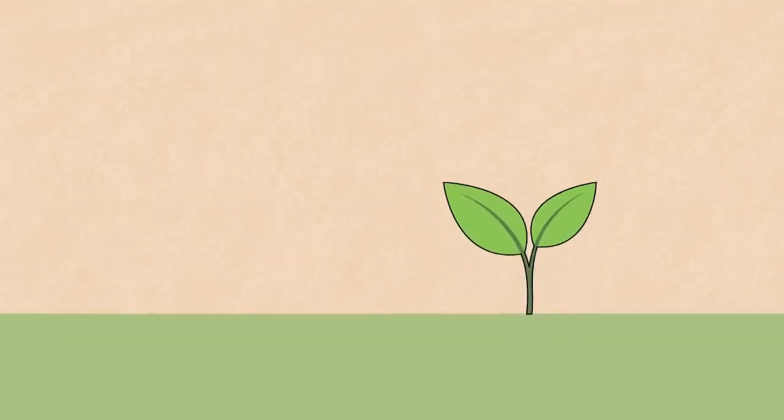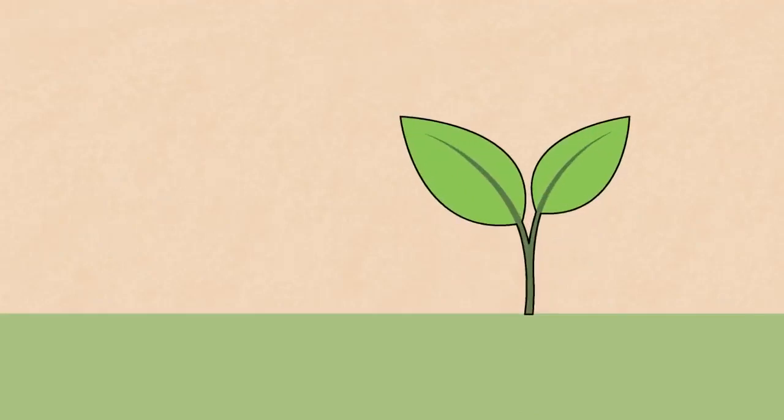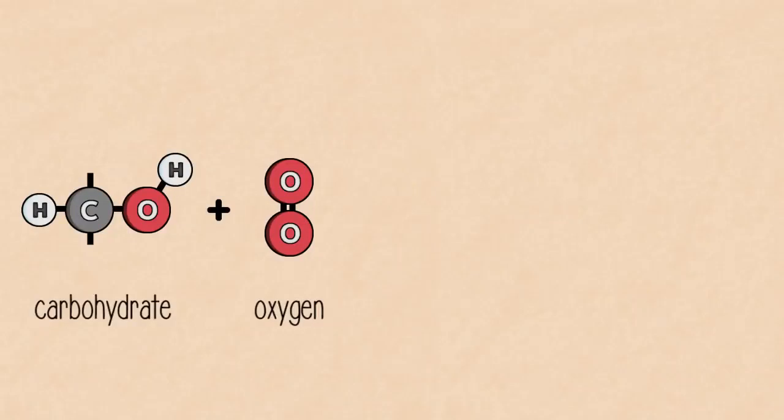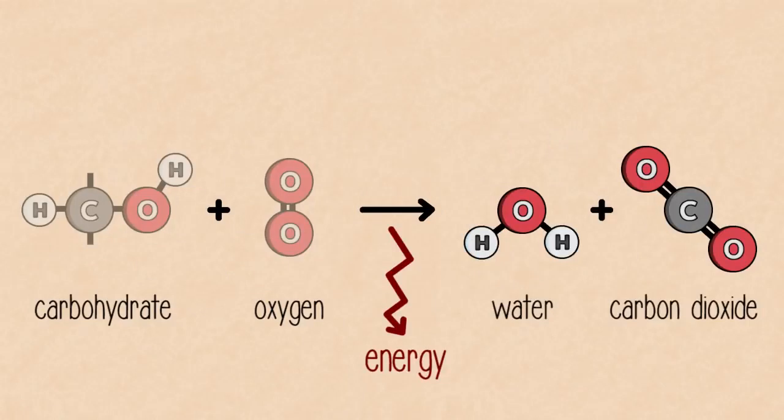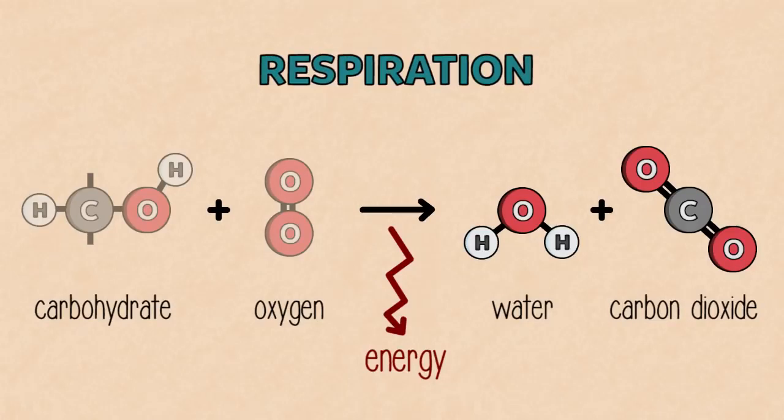Energy is now stored, and living things can use the carbohydrates to build their bodies and structures. To obtain energy, they simply reverse this reaction, letting the oxygen and the carbohydrate rejoin, forming carbon dioxide and water all over again. And this is respiration.